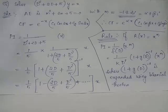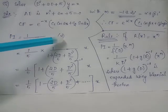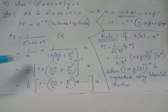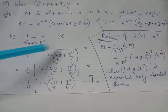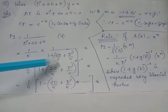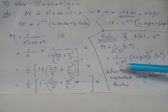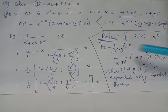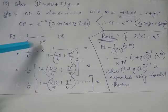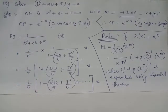For example, here we have 1 by f of D acting on x can be rewritten as 1 by 5 times 1 by 1 plus 2D by 5 plus D squared by 5, which acts on x. Just like we took a constant outside from operator f of D, we have taken the constant 5 outside the complete operator f of D, so that f of D equals 5 times 1 plus 2D by 5 plus D squared by 5.